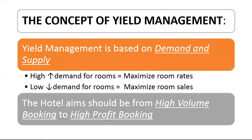Yield management is based on demand and supply. Higher demand for rooms means the hotel should maximize room rates — when occupancy and demand are very high, the hotel should sell rooms at rack rate or maximum rate and avoid giving discounts. Low demand for rooms means the hotel should maximize room sales — during slack season with low occupancy, the hotel should aim to maximize occupancy by selling rooms at a right discounted price. The hotel's aim should be from high volume booking to high profit booking.